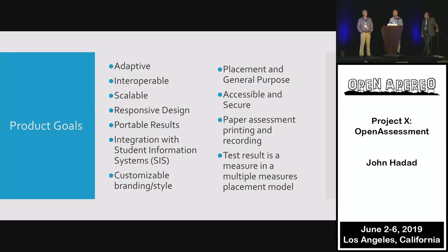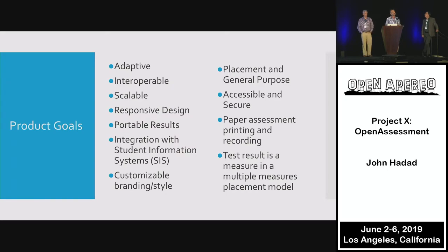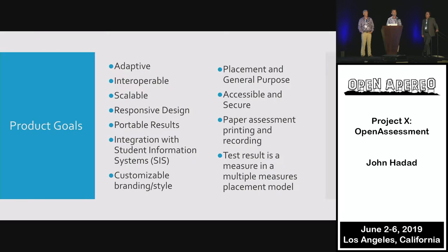We also needed to support paper assessments. There are populations within the California community college system that do not have access to the Internet, primarily incarcerated populations, so paper assessments were necessary. From an ADA perspective, paper assessment is also a requirement. Additionally, California legislation requires us to use multiple measures of assessment, so we built the platform to take in high school transcript information and, in a disjunctive manner, provide the student with the placement where they'd have the most likelihood of success.